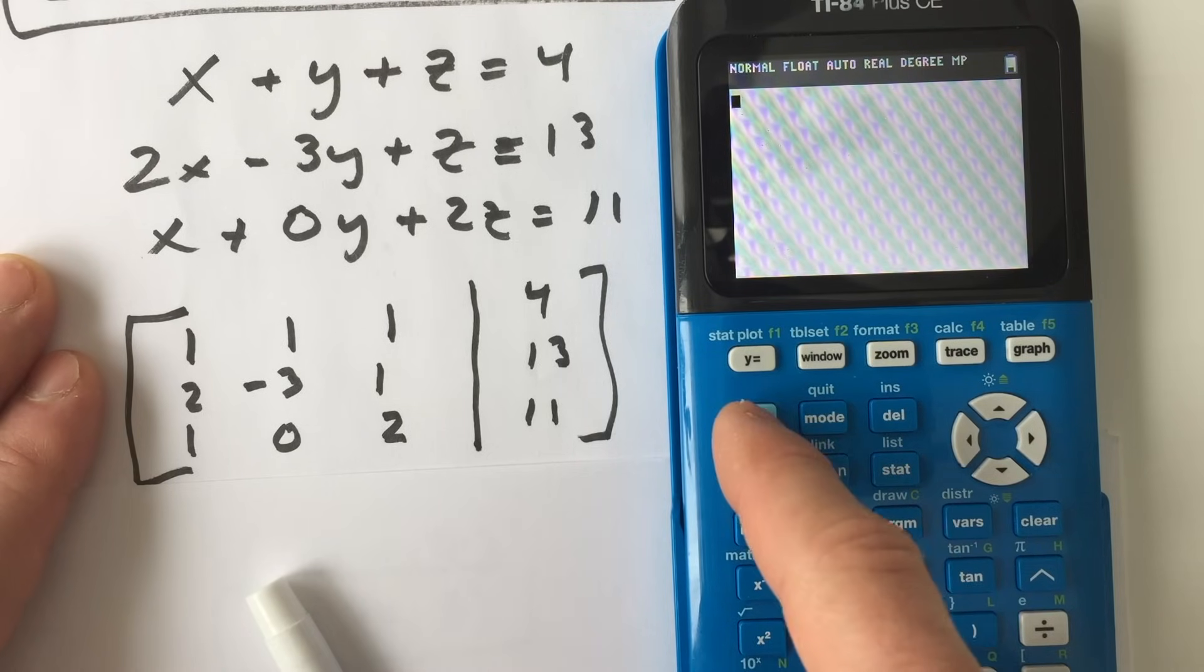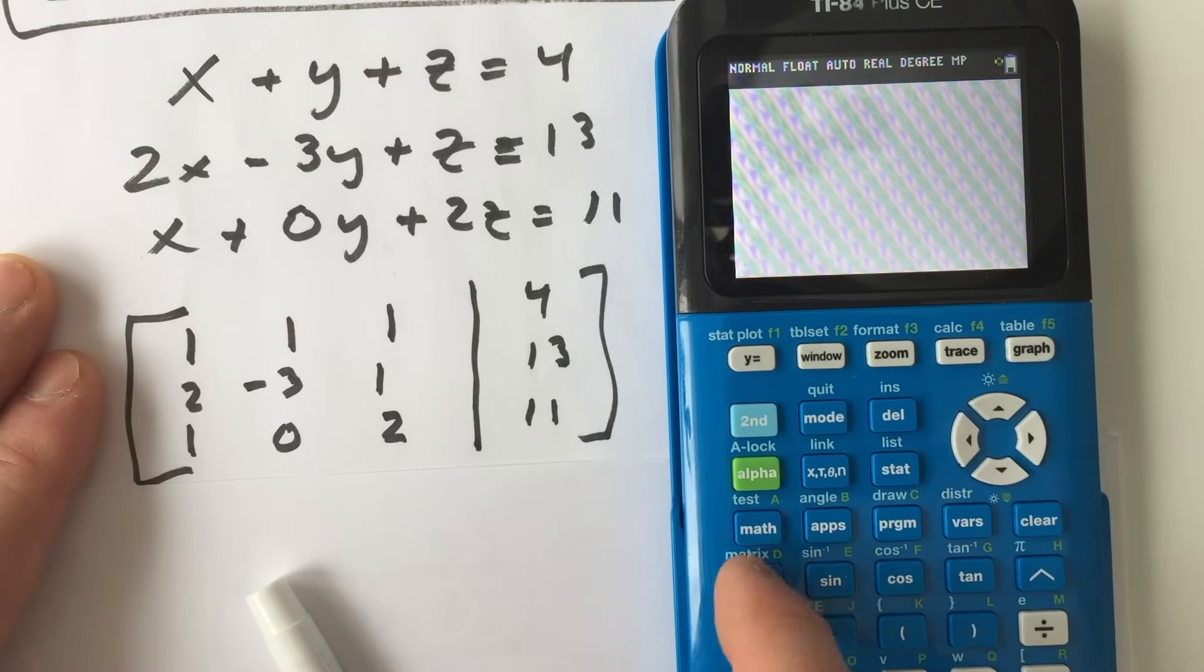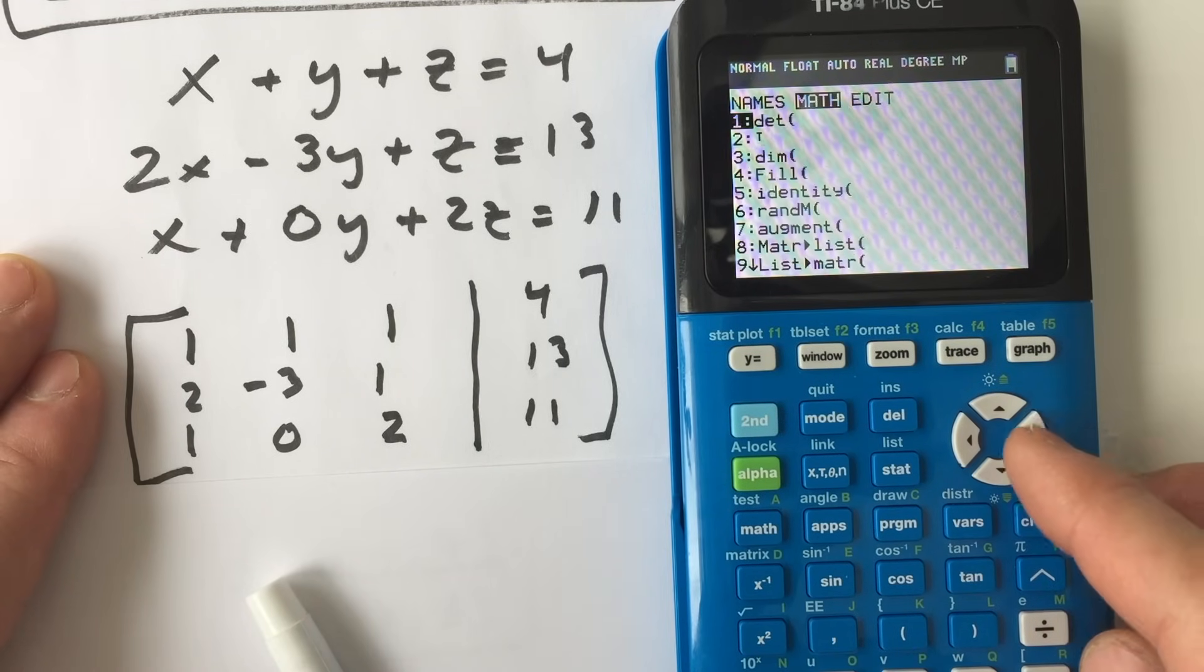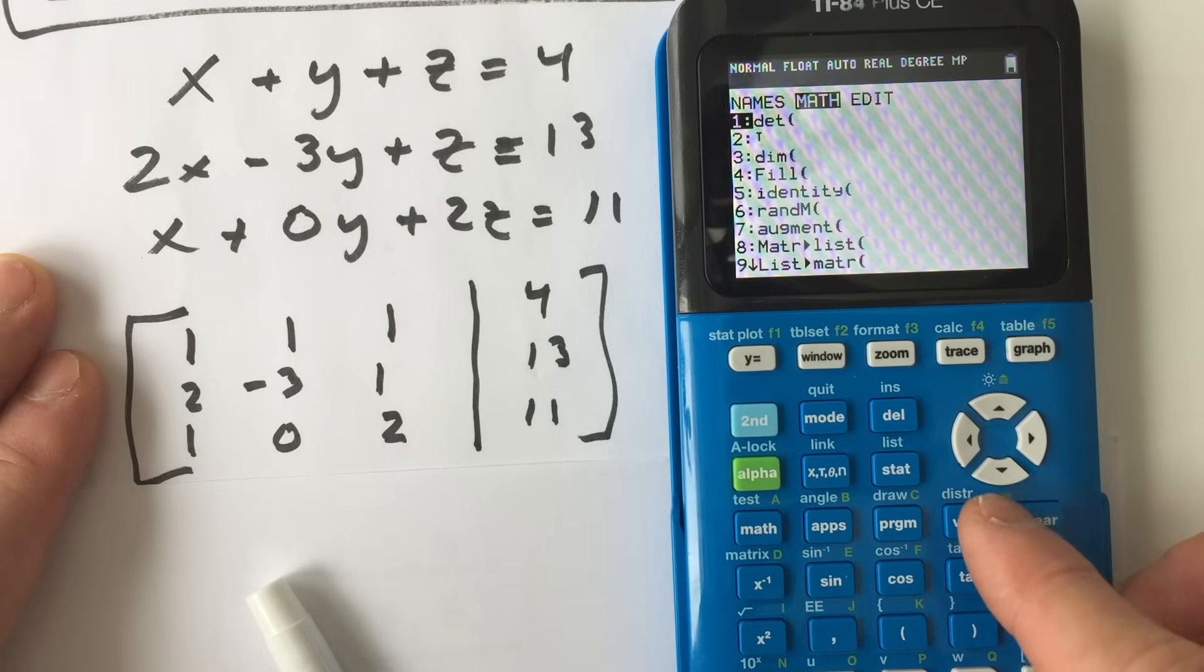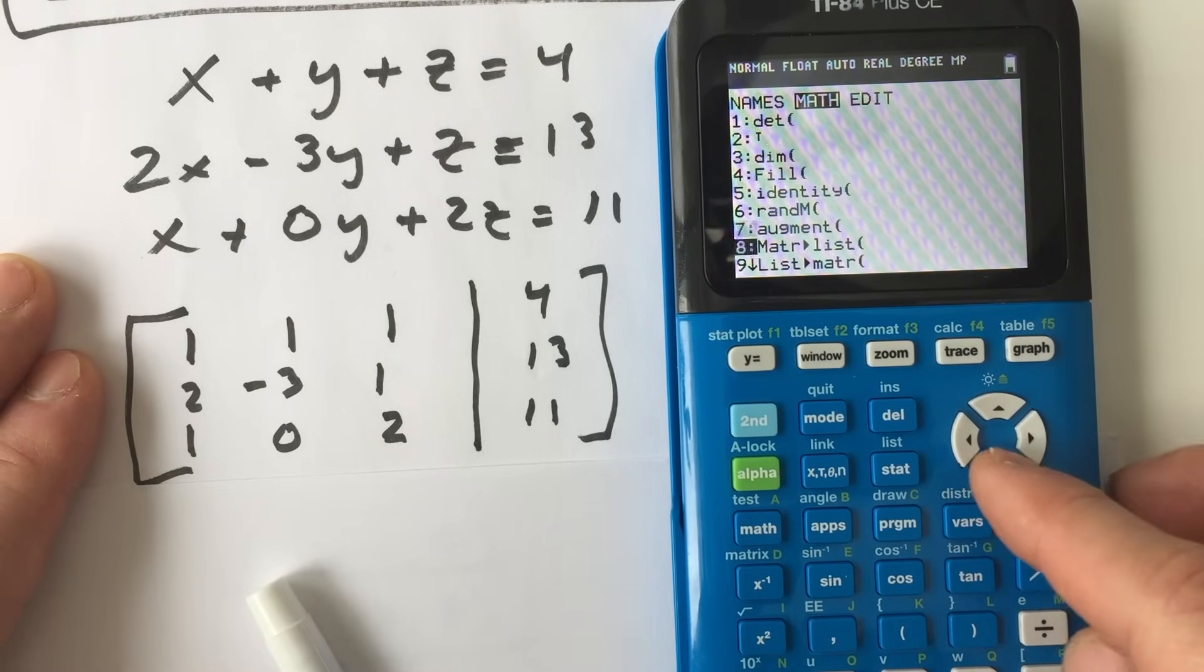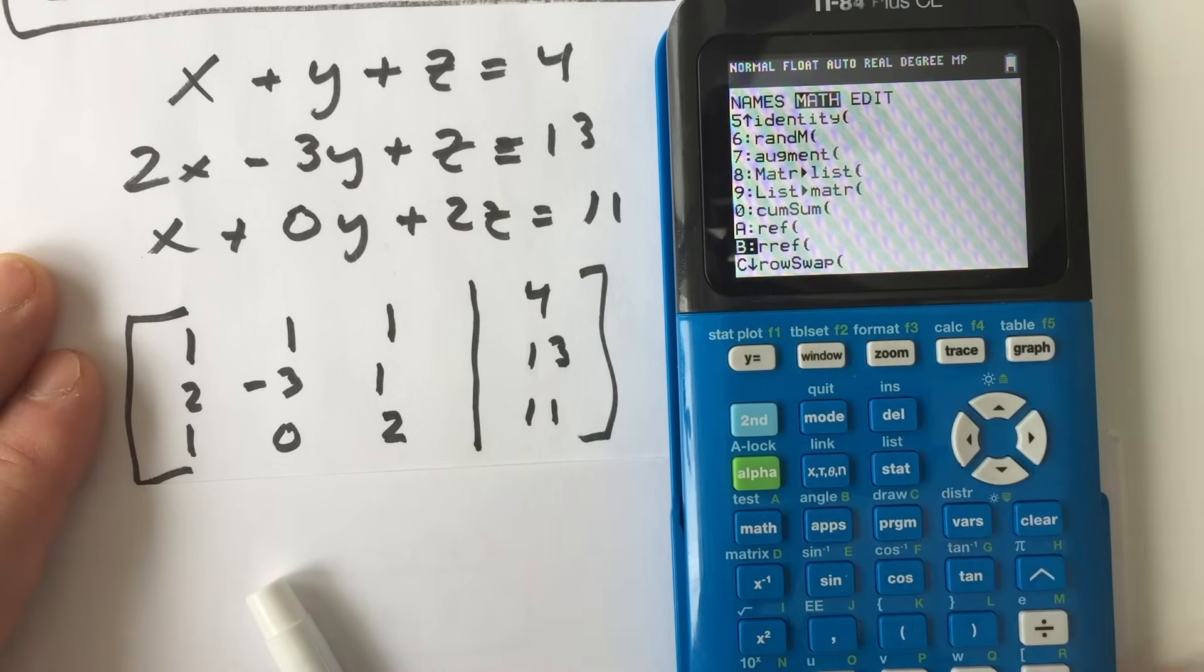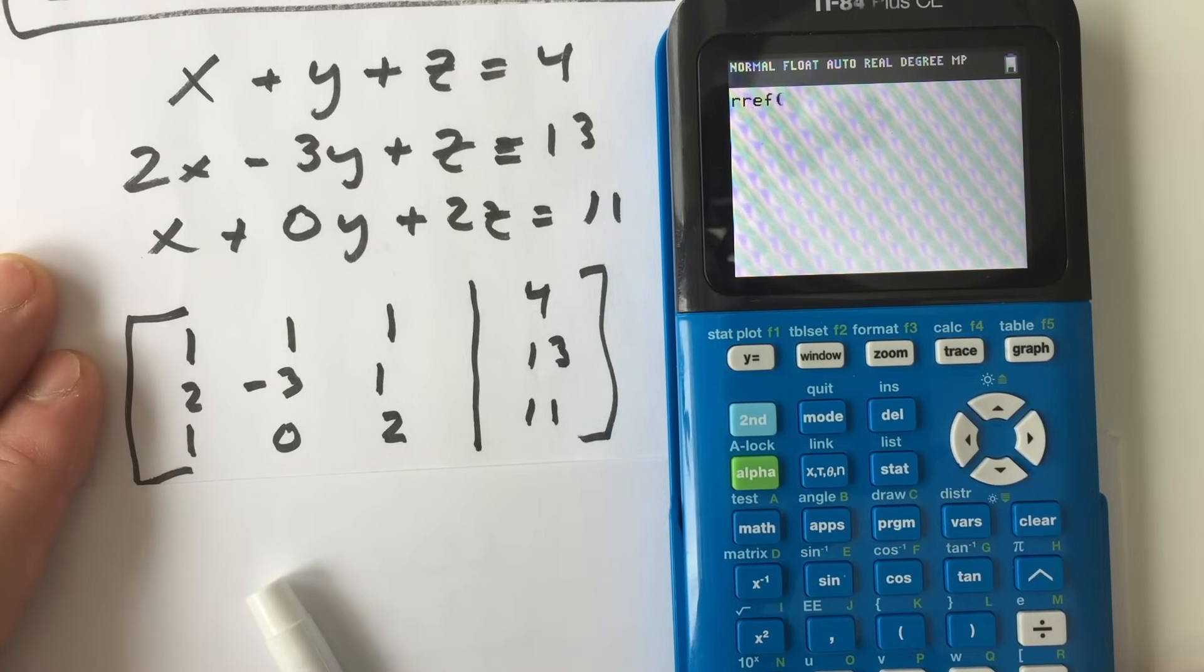And you want to go back to second matrix. And what you want to do is you want to select math. So arrow to the right. And you want to arrow down, you want to go to row reduced echelon form. So see letter B here, R, R, E, F. Go ahead and press enter in your lower right-hand corner.